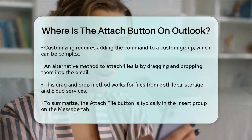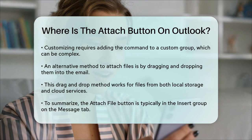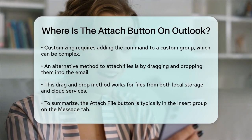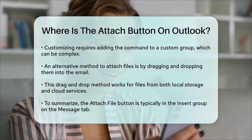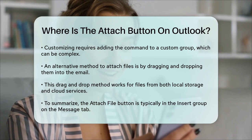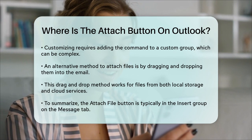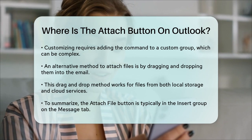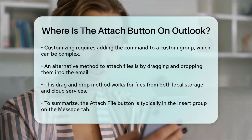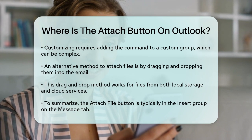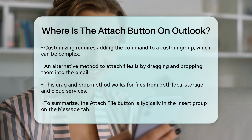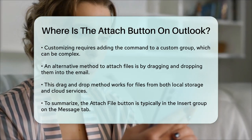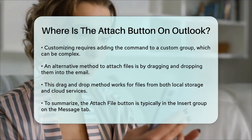So to recap, the Attach button in Outlook is usually found in the Insert group on the Message tab, and it's labeled as Attach File. If you can't find it, you might need to customize your ribbon settings or use the drag-and-drop method to attach your files.